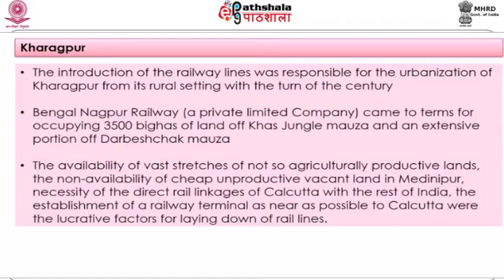Bengal Nagpur Railway, a private limited company, acquired about 3,500 bighas or about 562 hectares of land for the establishment of the railway terminal. The reason Kharagpur was selected was that there was no cheap unproductive vacant land in and around Medinipur town, and the availability of vast stretches of not-so-agriculturally-productive land in Kharagpur made it a suitable place for developing a railway terminal and township.